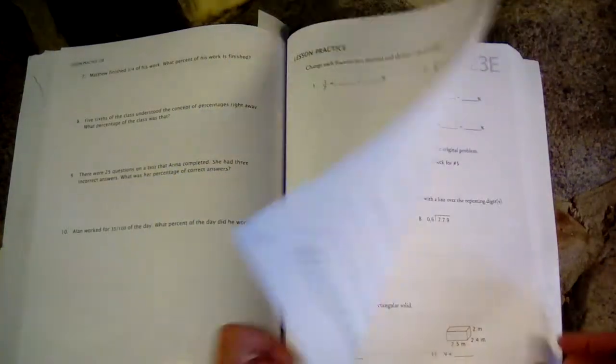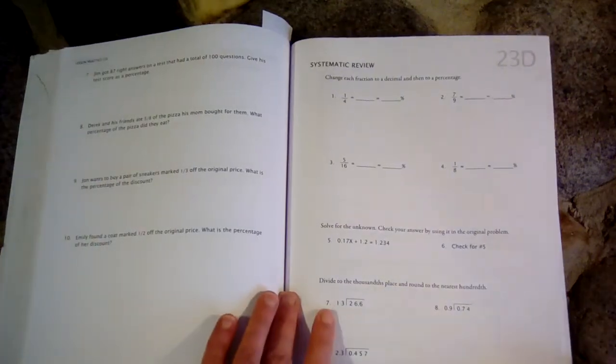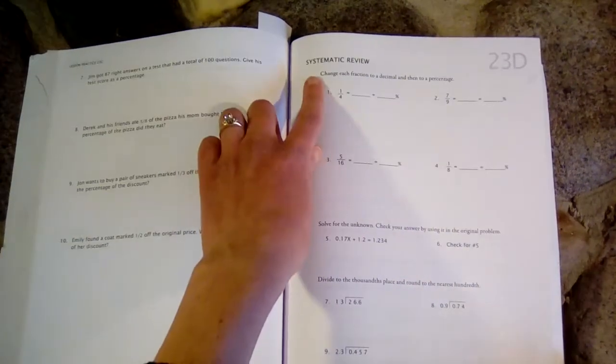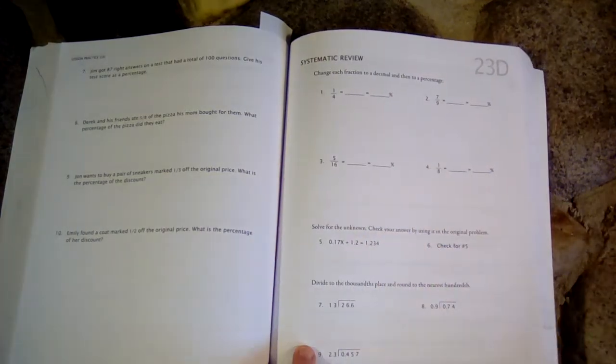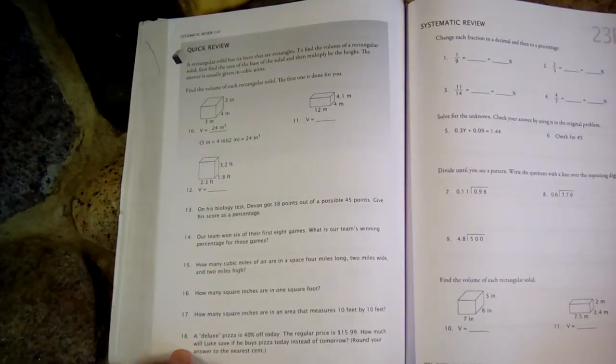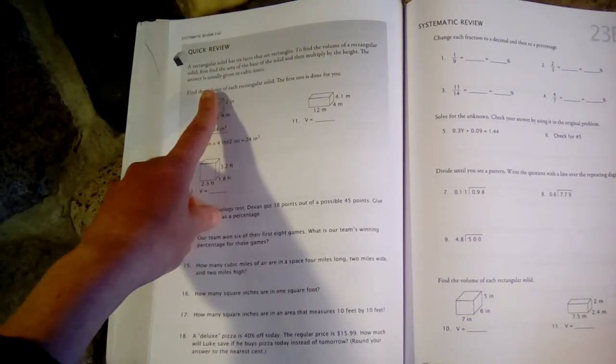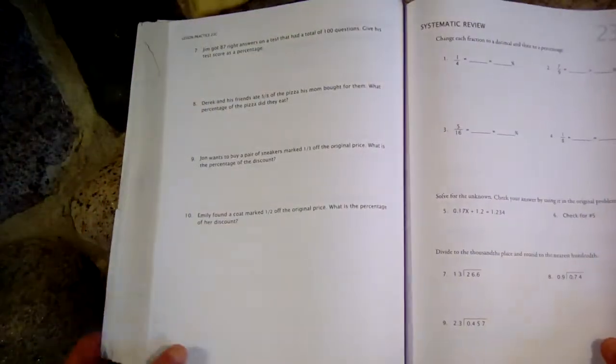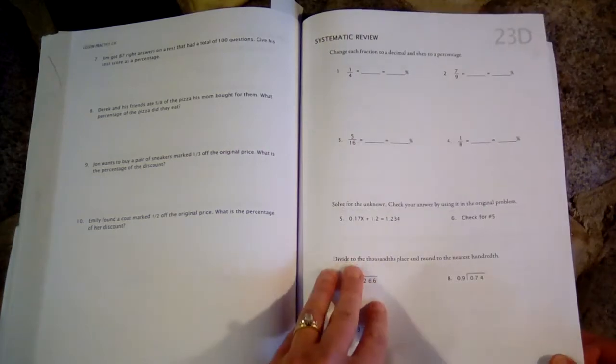The next 3 worksheets are called D, E, and F, and these are called Systematic Review Pages. These worksheets cover the new concept covered, as well as reviewing other concepts that have previously been taught in this book or in previous Math-U-See books. So you see here, Quick Review, and I find the Systematic Review Pages to be very important, so we always make sure we do D, E, and F.